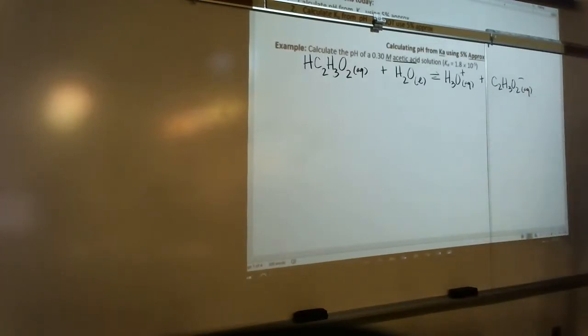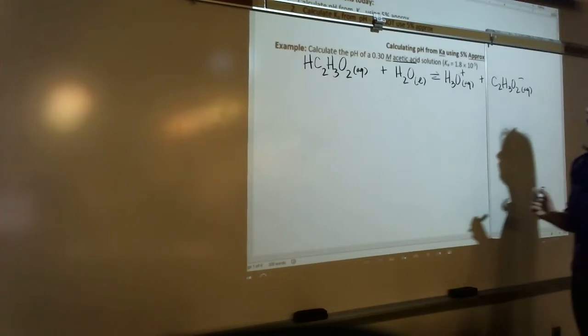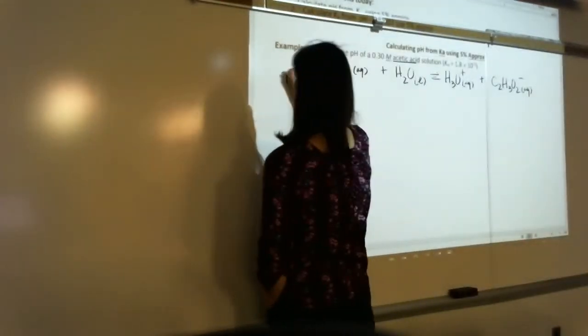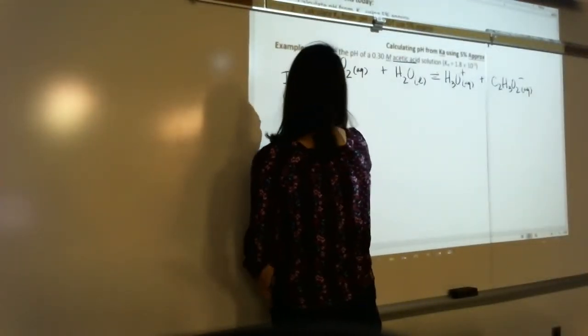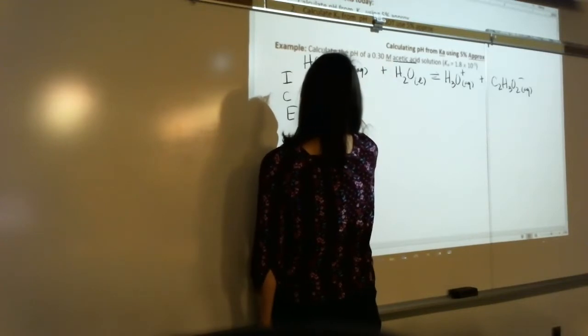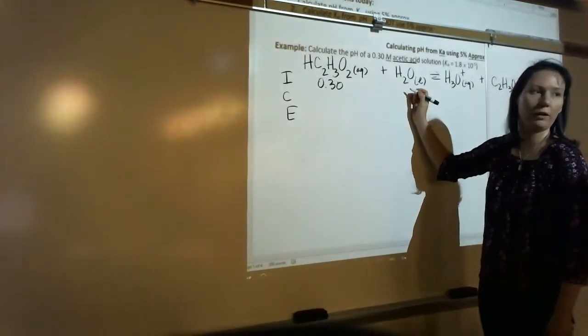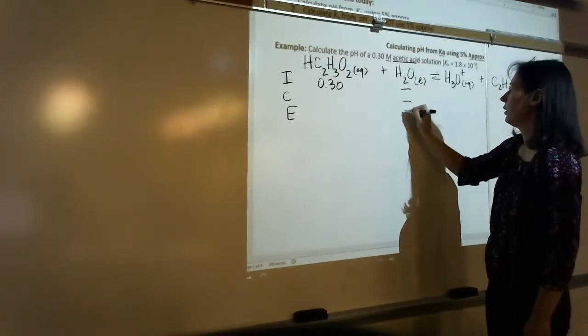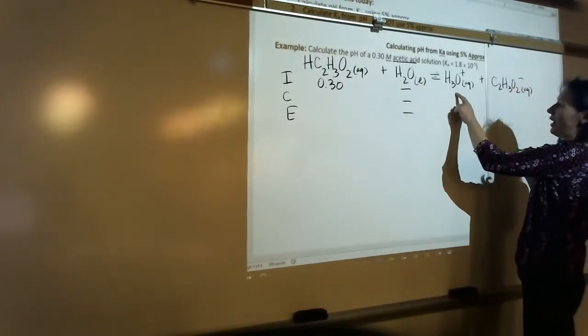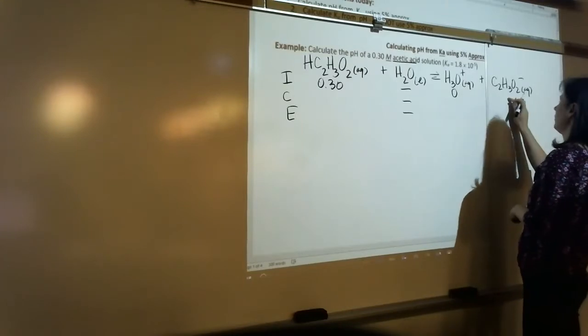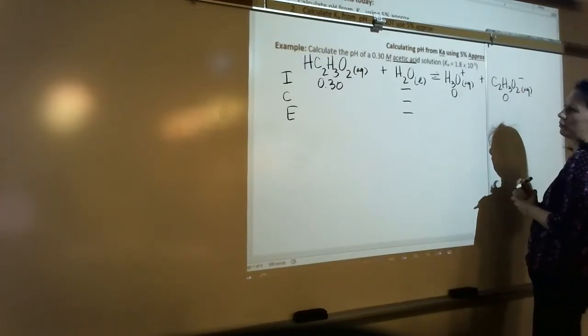Do we agree on the dissociation equation? Acetic acid produces hydronium ion and acetate. So we're going to do an ICE table here, I-C-E. It's 0.3 molar, so 0.30. This is a liquid, so do we include it at all? No. Alright, there's none of this initially, zero, none of acetate initially as well.